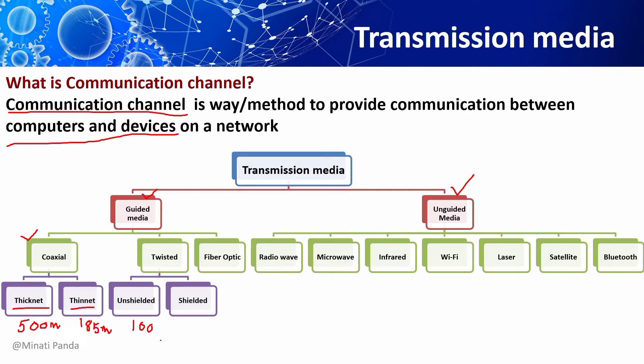Optical fiber consists of thin glass-like material which is so constructed that it can carry light signals from a source at one end of the fiber to a detector at the other end. Fiber optic cable can be either single-mode, which supports a segment of 2 kilometers, or multi-mode, with a segment of 100 kilometers.